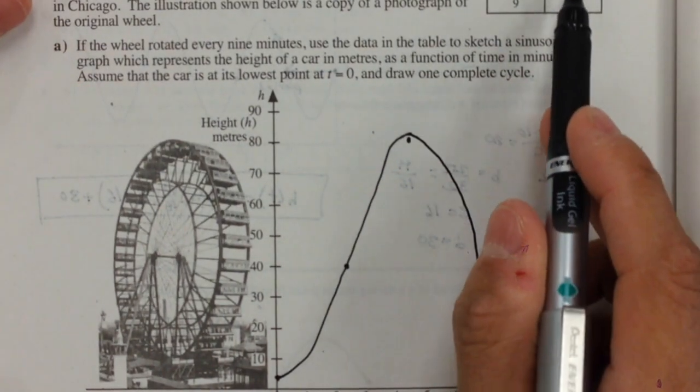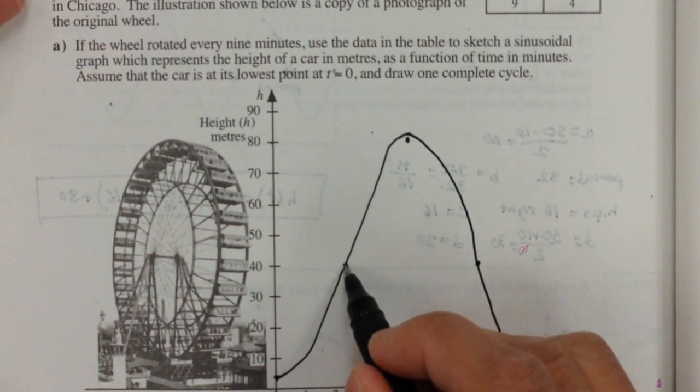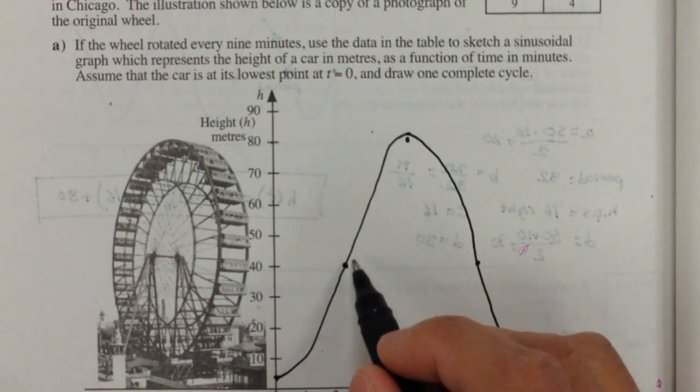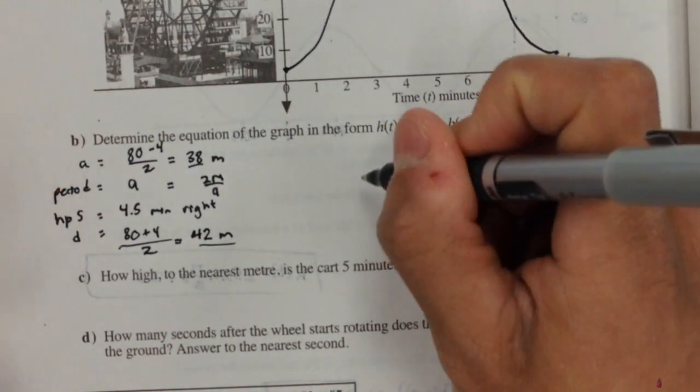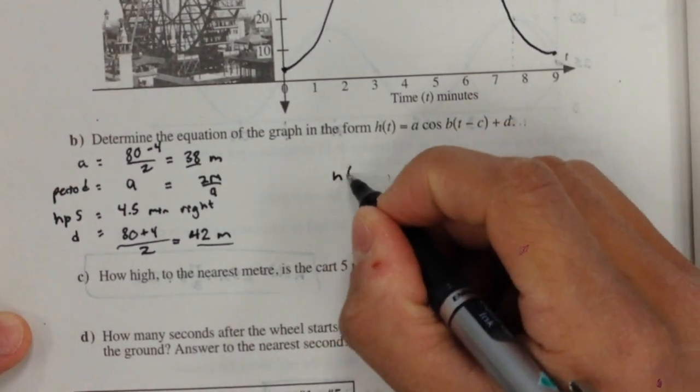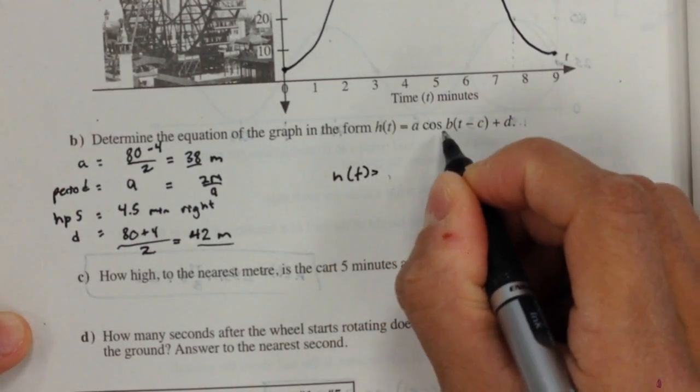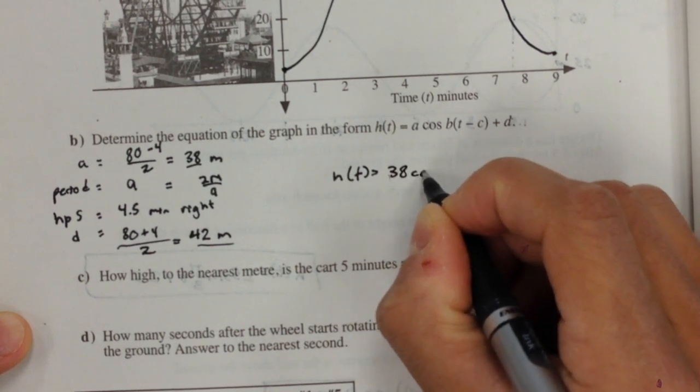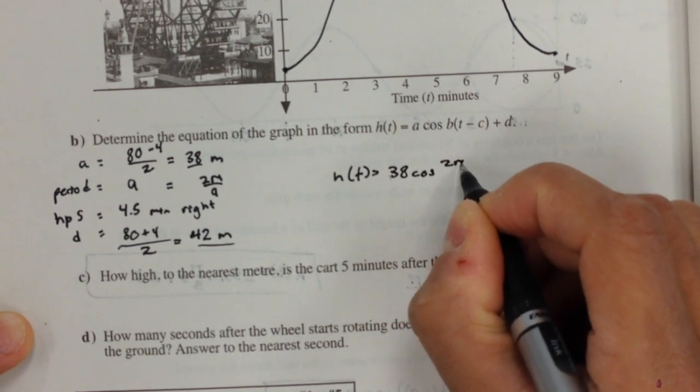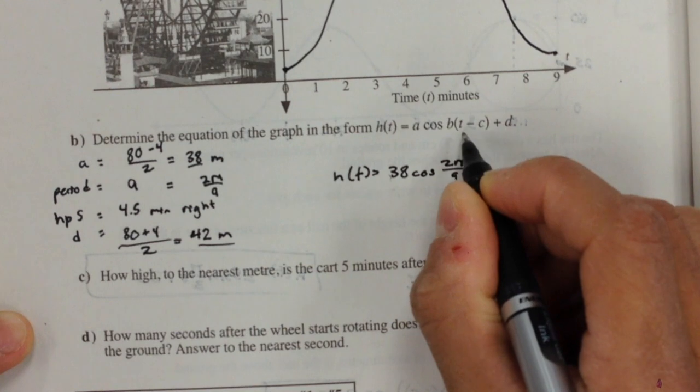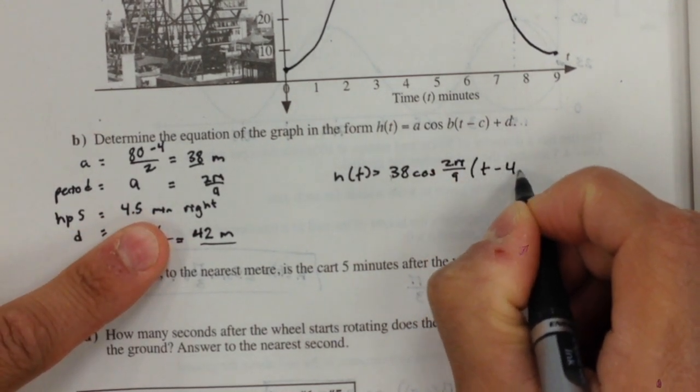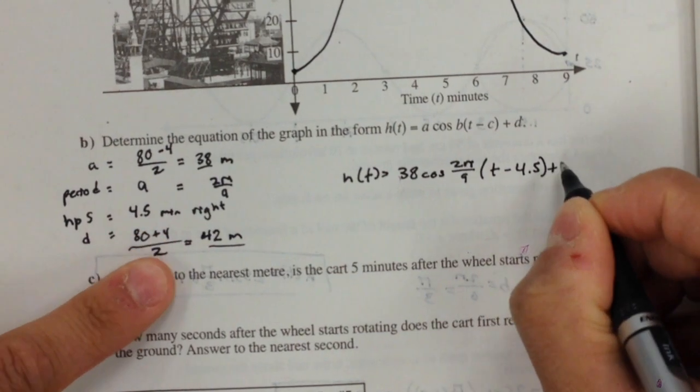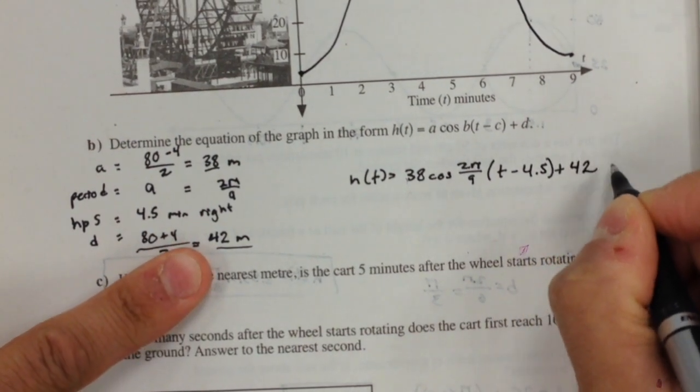We can now plug this into this equation, where H(t) is equal to the amplitude 38 cosine 2π over 9 times t minus 4.5, plus my vertical displacement which was 42.